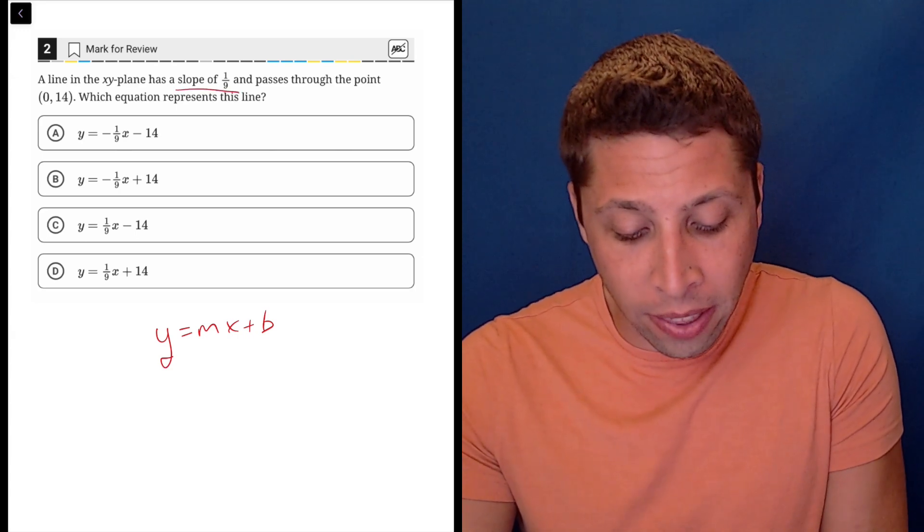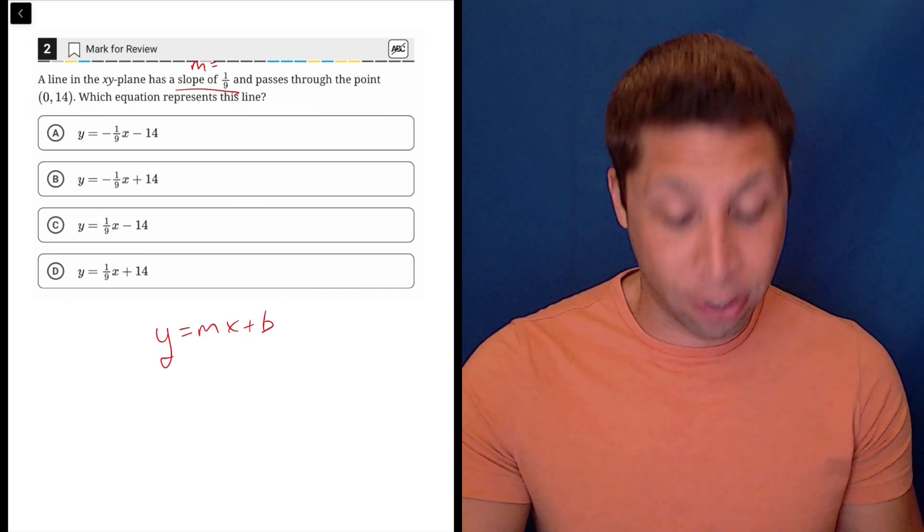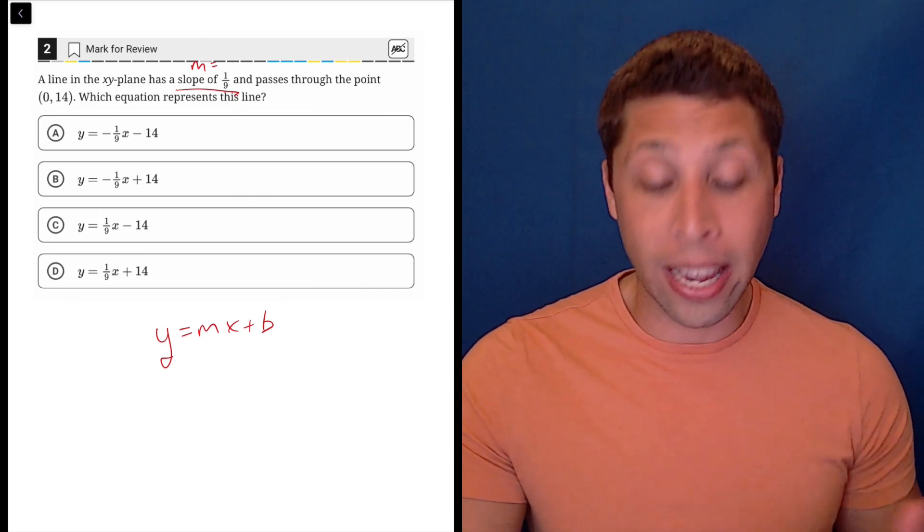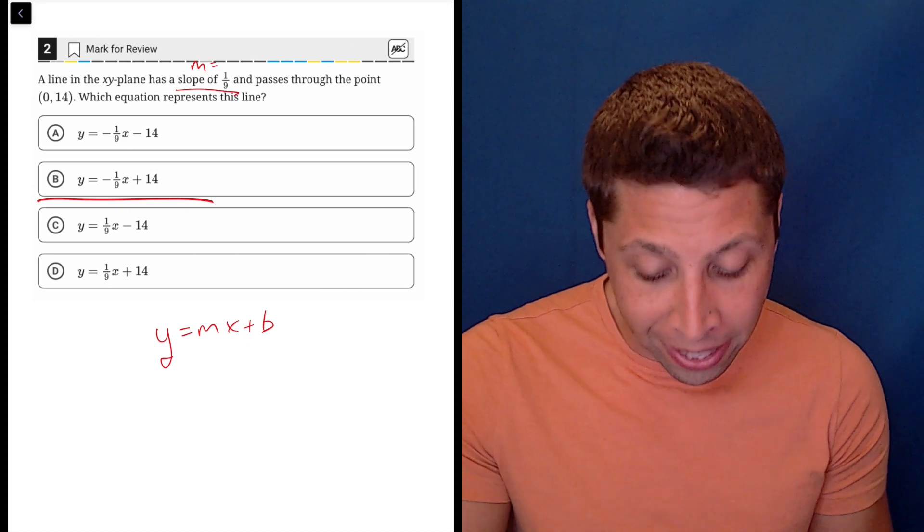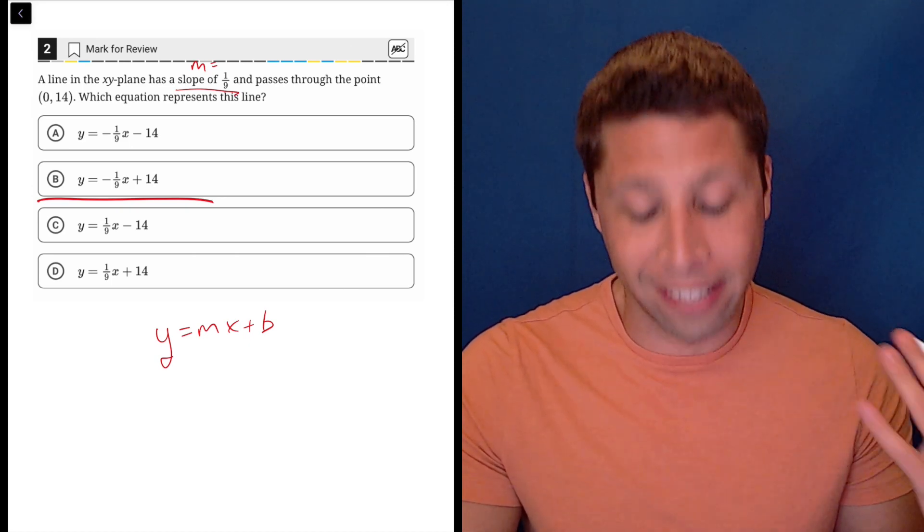They tell us that the slope is 1/9, so that's our m, and hopefully you know that's the piece attached to the x. We basically have two choices: we can either pick negative 1/9 in A or B, or positive 1/9 in C or D.